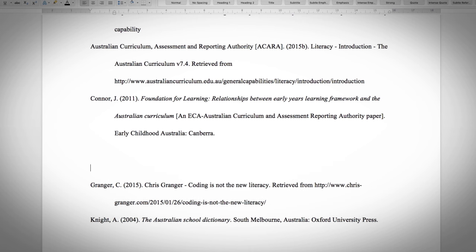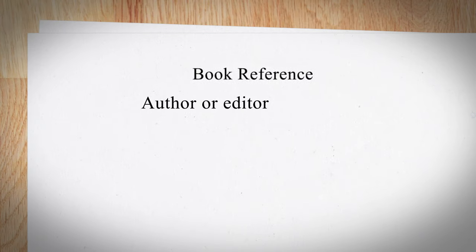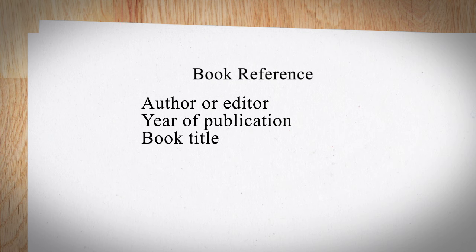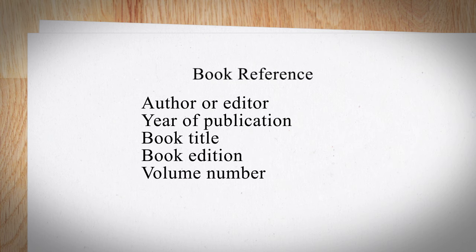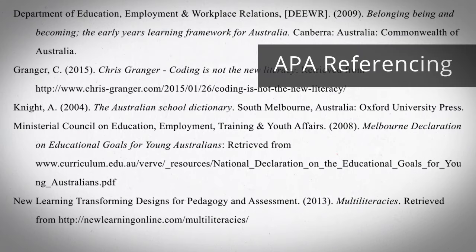Just make sure you reorder them in alphabetical order before you submit. For a book reference, you must include the following information: the author or editor, year of publication, book title, its edition, volume number, place of publication, and publisher. Use the APA referencing method this way, taking note of the order of the information and the punctuation used.